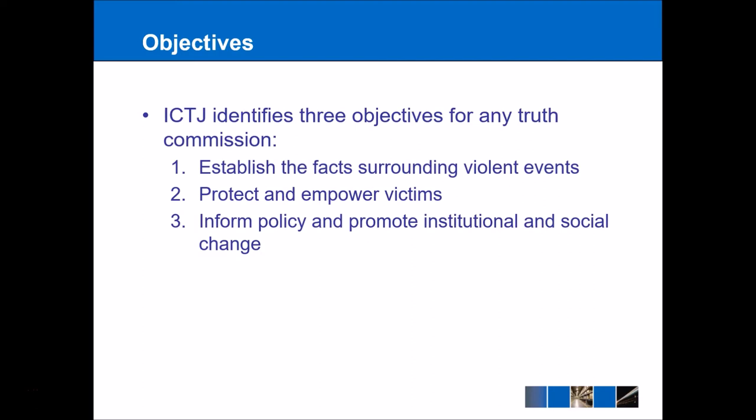The ICTJ — the International Centre for Transitional Justice — is a Brazilian-based pressure group that looks at truth commissions and other means of transitional justice. They identify three key objectives that any truth commission should aim for, which relate respectively to the past, the present, and the future. So, establishing the facts surrounding violent events is a way of looking into a country's past. Protecting and empowering victims is a way for victims to feel safe and empowered by the experience. And finally, moving forward and establishing a long-term solution — truth commissions should inform policy and promote institutional and social change.